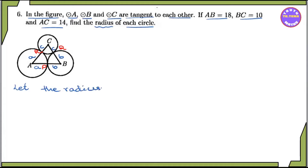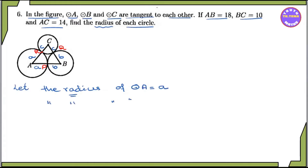We denote the radius of circle A as small a, the radius of circle B as small b, and the radius of circle C as small c.